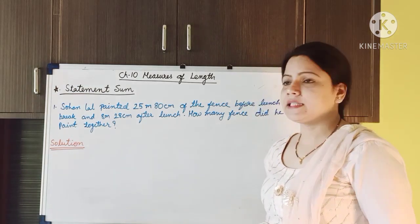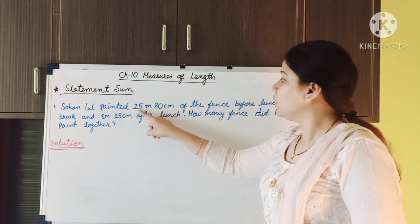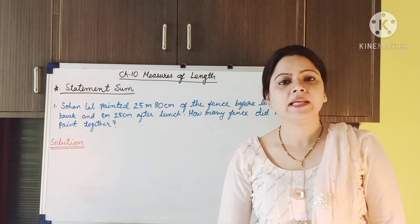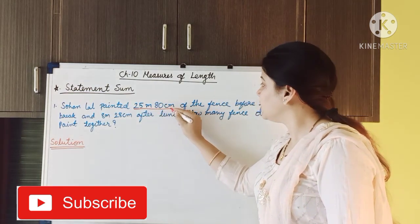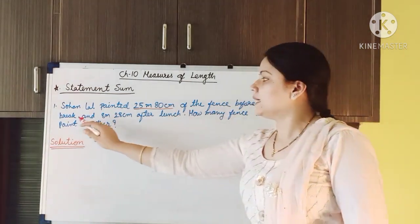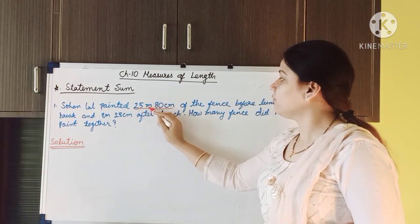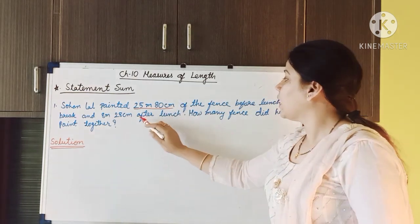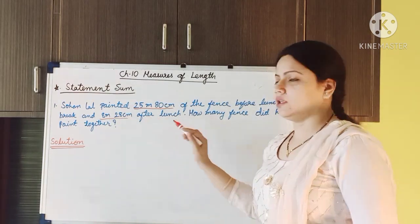So as you can see I have written here one question. Sohan Lal painted 25 meter 80 centimeter of the fence — that is, before lunch break he has painted 25 meter and 80 centimeter of the fence. Now add 8 meter and 28 centimeter after lunch.